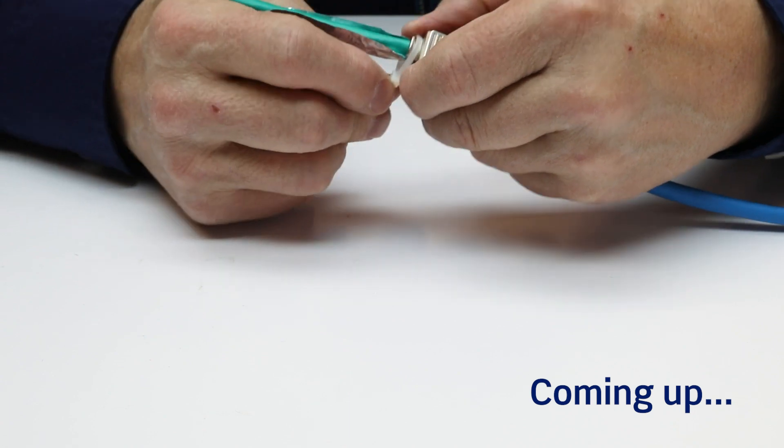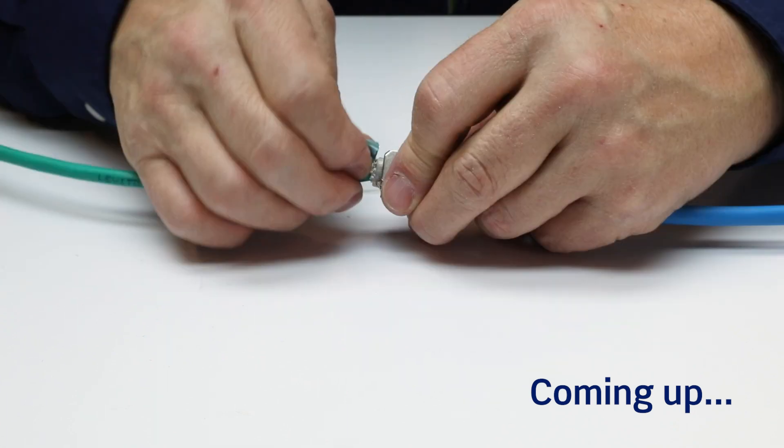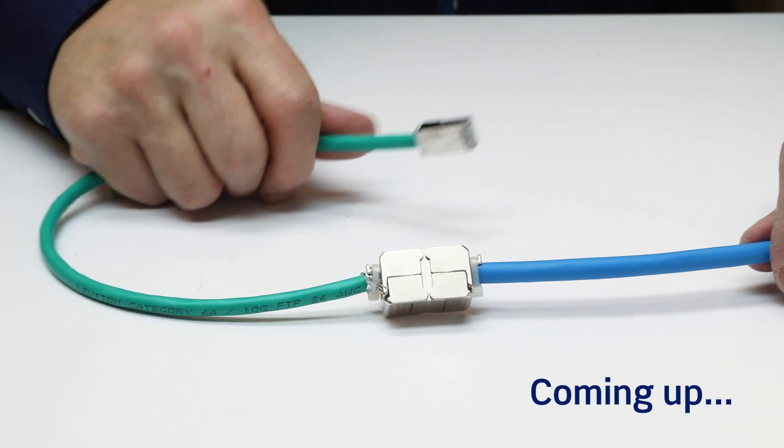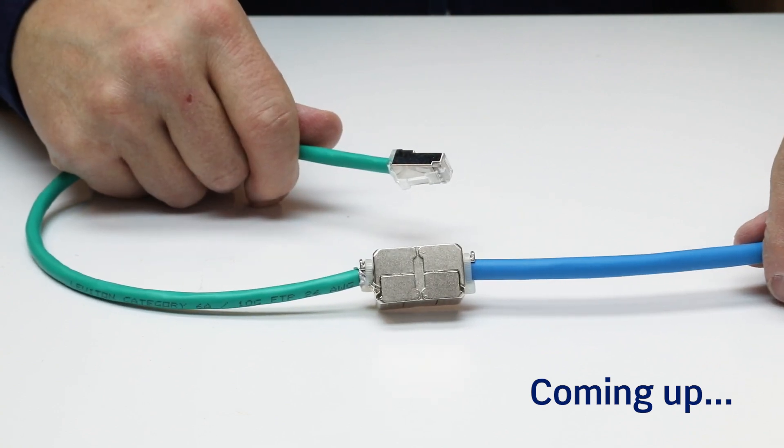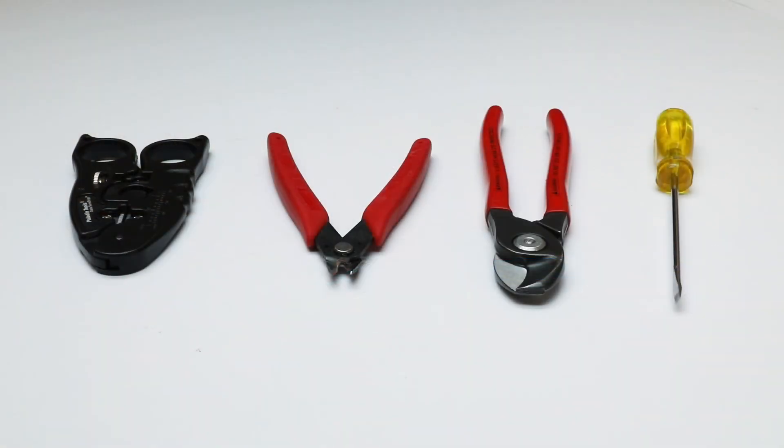It should also be noted that the VXC may be used with 24 gauge or 26 gauge cords. 28 gauge cords are not recommended. No proprietary tools are required to terminate the VXC Coupler, just standard hand tools.